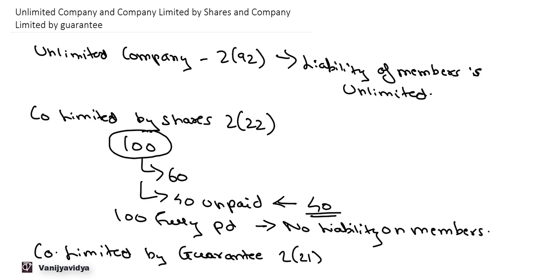In a company limited by guarantee, if the company is wound up or dissolved, then the liability of the members is up to the amount prescribed in the memorandum, and not based on the shares.